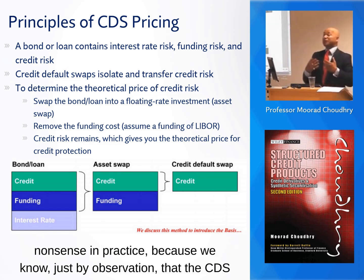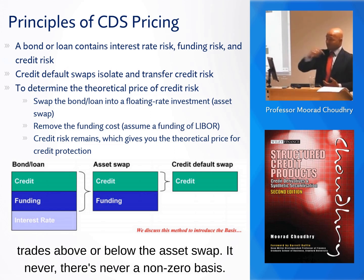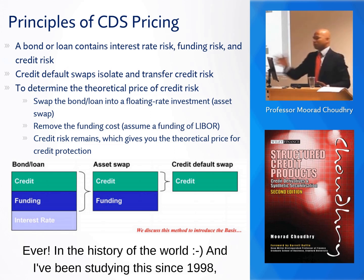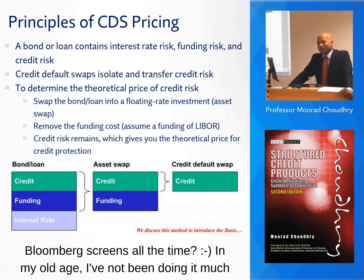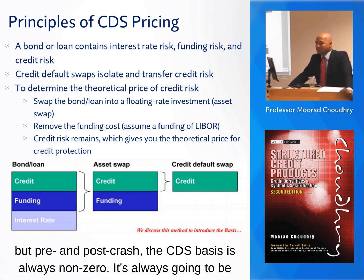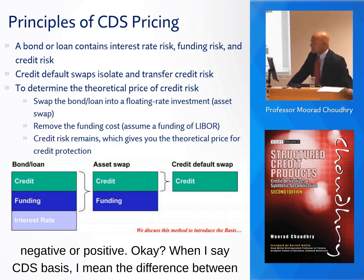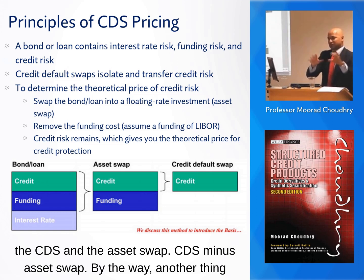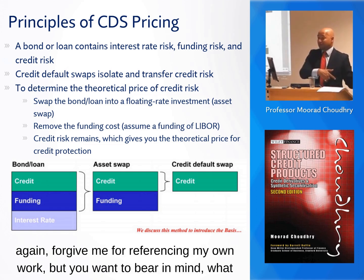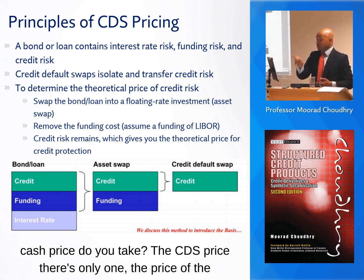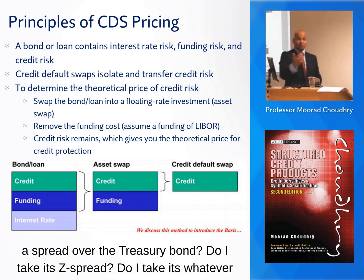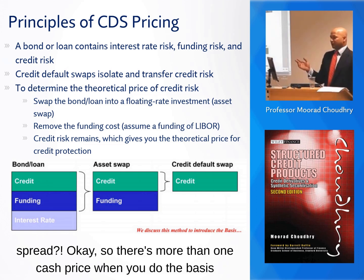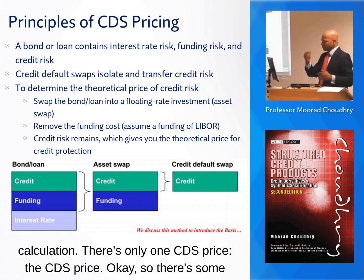Of course, that is all nonsense in practice, because we know just by observation that the CDS trades above or below the asset swap. There's never been a zero basis in the history of the market. Pre- and post-crash, the CDS basis is always non-zero — always negative or positive. When I say CDS basis, I mean the difference between the CDS and the asset swap: CDS minus asset swap. Also worth noting: what cash price do you take? The CDS price is just one, but for the cash side you could take the spread over swap, spread over treasury, Z-spread, and so on. There's more than one cash price to use in the basis calculation.